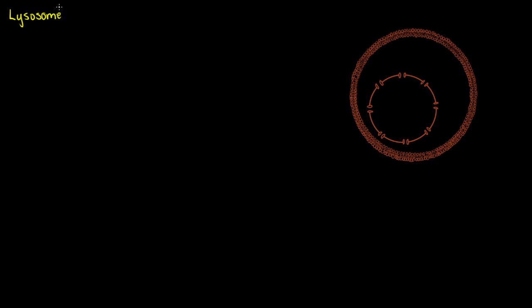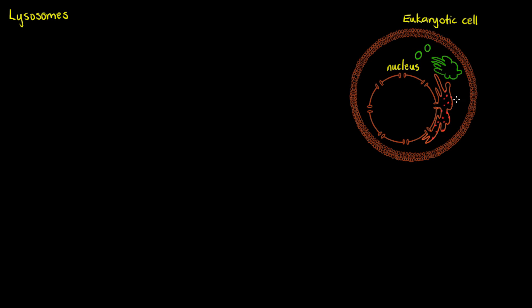Welcome to this tutorial where we will be discussing intracellular organelles called lysosomes. These are quite complex, so I'll summarize the process of where they come from and what they do as best I can. If we have a eukaryotic cell here with a nucleus, we are also going to have an endoplasmic reticulum associated with the nuclear membrane and a Golgi apparatus nearby.